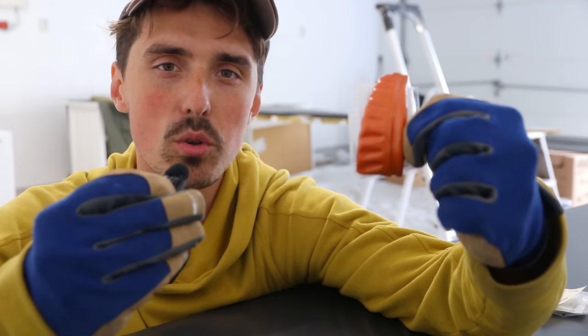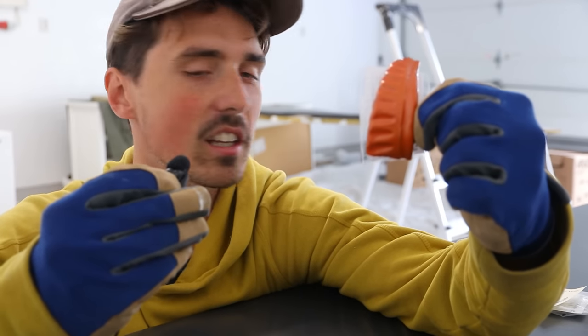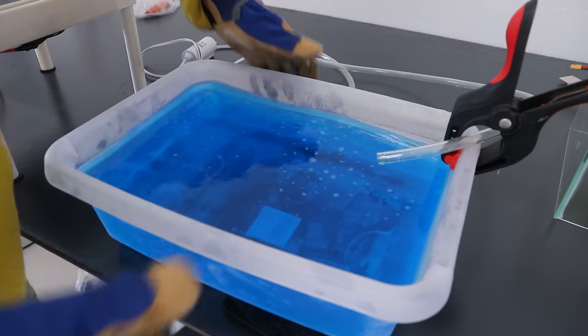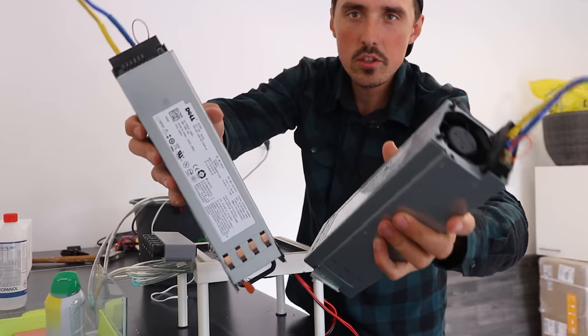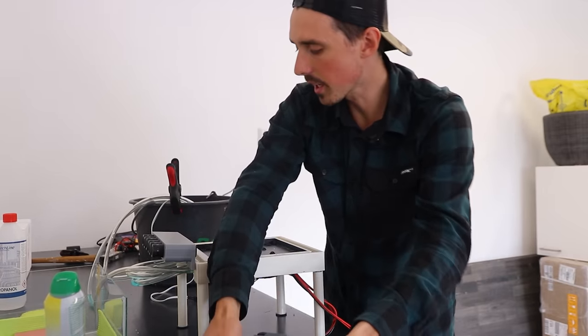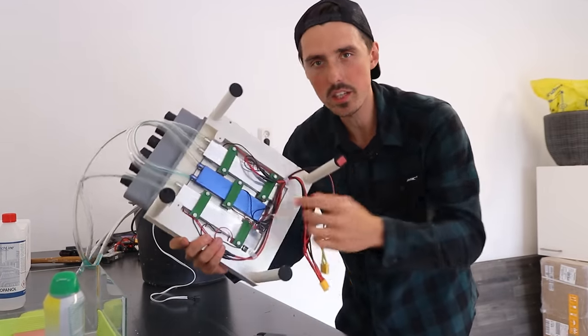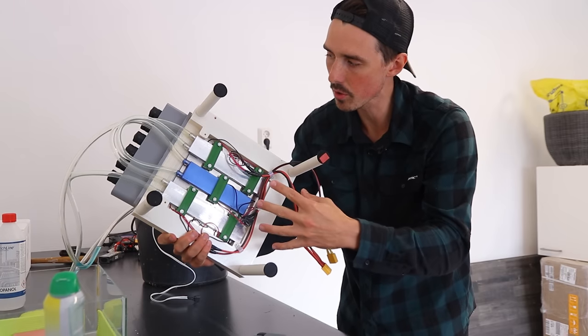But first let me show you the background radiation inside the cloud chamber as these two massive power supplies run electricity through the Peltier devices on the bottom side of the cloud chamber.